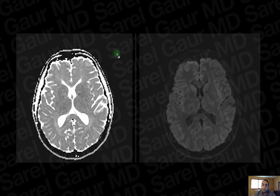I want to go through all the different sequences in MRI of the brain. This is an MRI of the brain with contrast, and I'm going to go through the different sequences which I think are important.